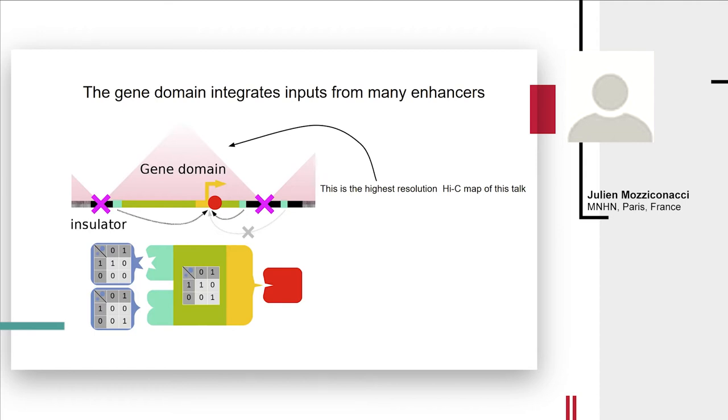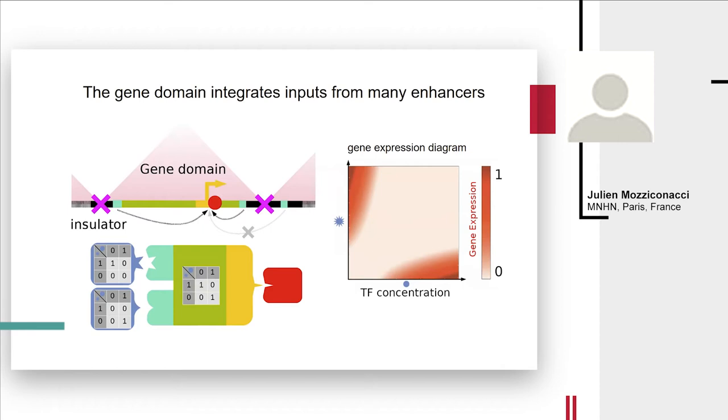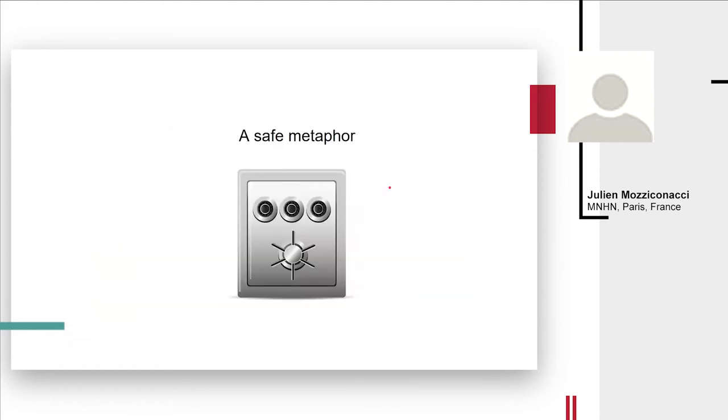Continuing the example I was giving, this truth table that we had in the previous slide, now we can add a second truth table coming from this enhancer that would be the exact opposite. So the activating transcription factor is now the round and the inhibiting is now the star. And what the genome does is that it sums up all these inputs and gives us a new truth table so that the gene X here will be active only if there is one and only one of the transcription factors. I apologize, but this is the only and the highest resolution HiC map that you would see in this talk.